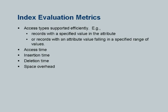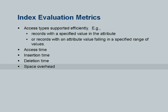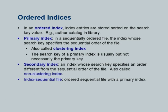What do you do with an index? There are several metrics: the time to access a record given a search key, time to access multiple records given a search key range, time to insert a record, time to delete a record, and how much space the index takes. We are going to focus on ordered indices, where the index entries are stored sorted on the search key value.